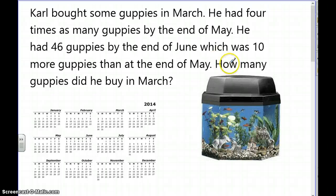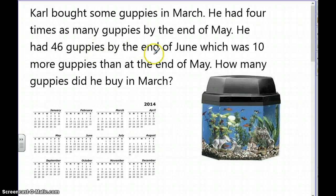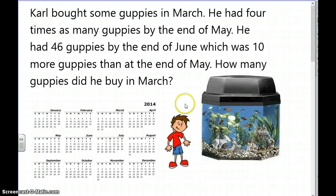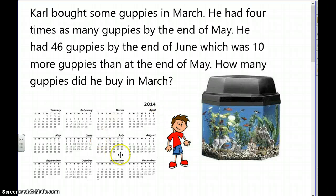That was a lot of information, so I know I'll have to read the problem a couple of times. As I was reading, I started to visualize. A guppy is a type of fish, so I'm picturing fish in a tank and a boy named Carl who bought some fish and put them in his tank.